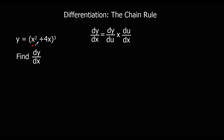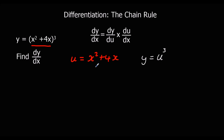In this case, the bracket — x squared plus 4x — is a function within another function. So if we rename x squared plus 4x as u, so u equals x squared plus 4x, that leaves us with y equals u cubed. What the chain rule tells us is we can get dy/dx by multiplying dy/du by du/dx — you can think of it as the u's cancel out and you're left with dy/dx.